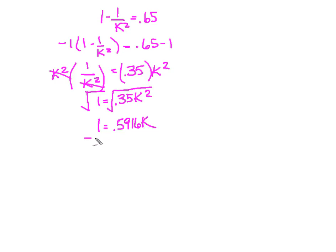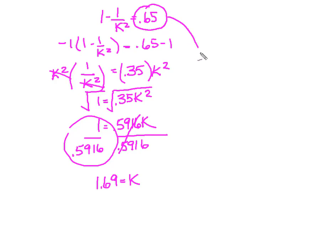So I've almost got k by itself. The last thing I've got to do is I've got to divide that 0.5916 out so that I can get k all by itself. So this one's going to cancel. This piece of math right here is going to give me 1.69 equals k. So now what I know is that interval that contains 65% of the data requires me to move plus and minus 1.69 standard deviations from the mean.